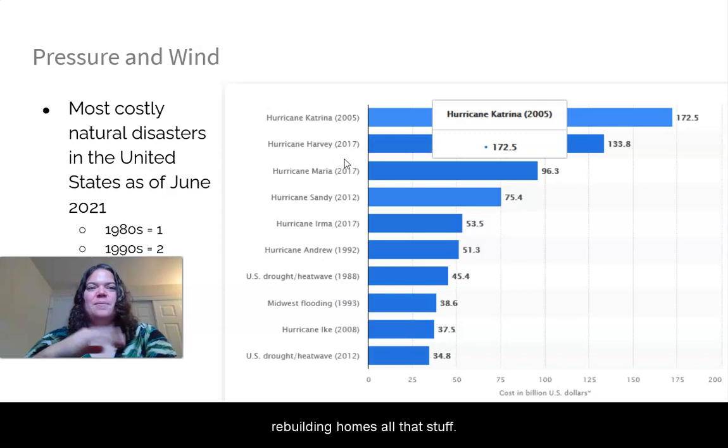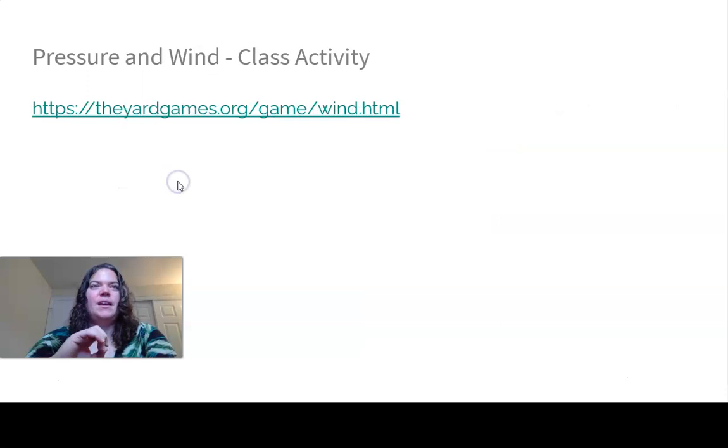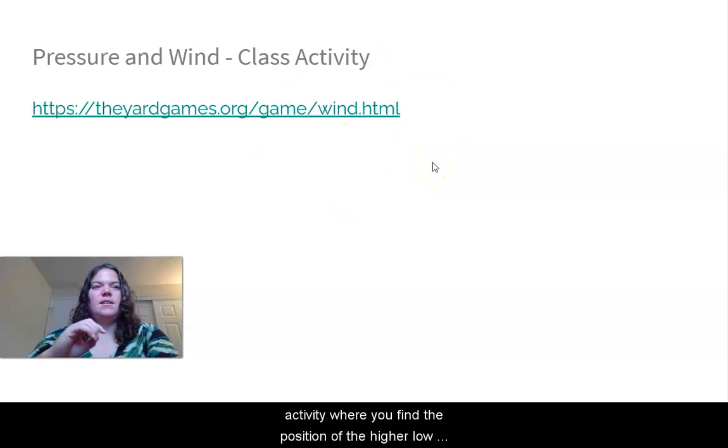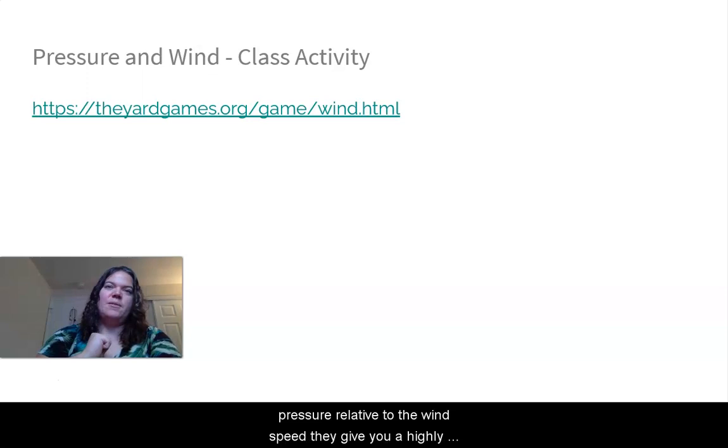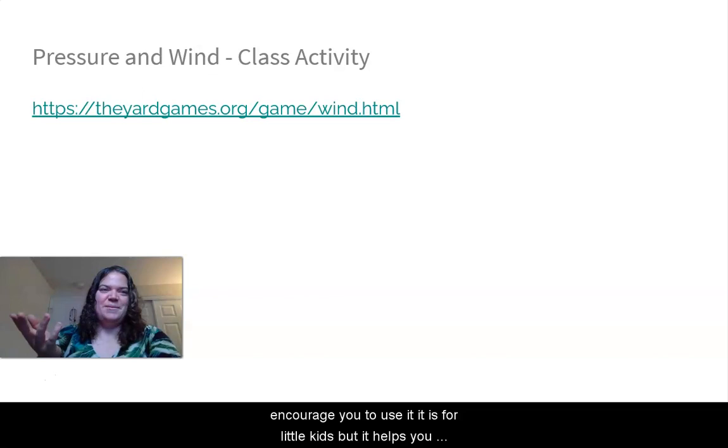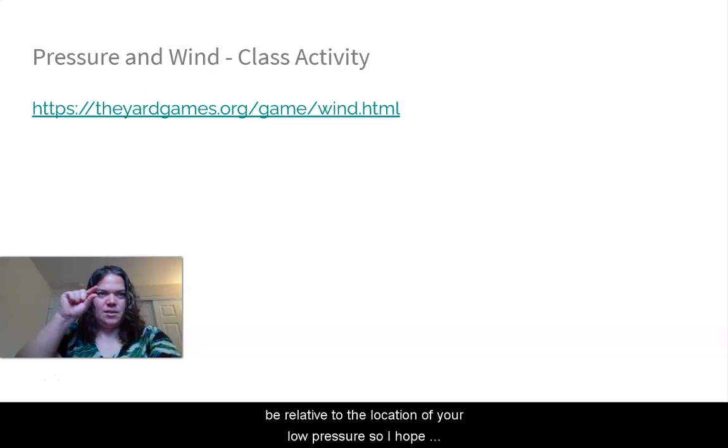All right. So there's your vocabulary. And then if we were in class, we would have done this activity where you find the position of the high or low pressure relative to the wind speed they give you. I highly encourage you to use it. It is for little kids, but it helps you practice with where should each wind direction be relative to the location of your low pressure. So I hope you enjoyed this lesson. I'll see you next time. Bye.